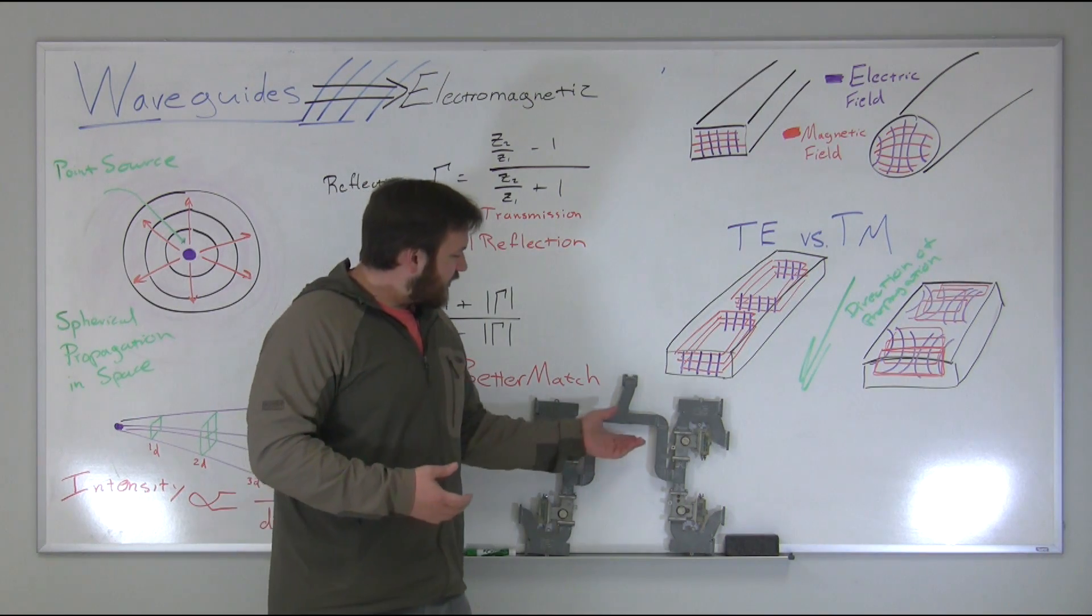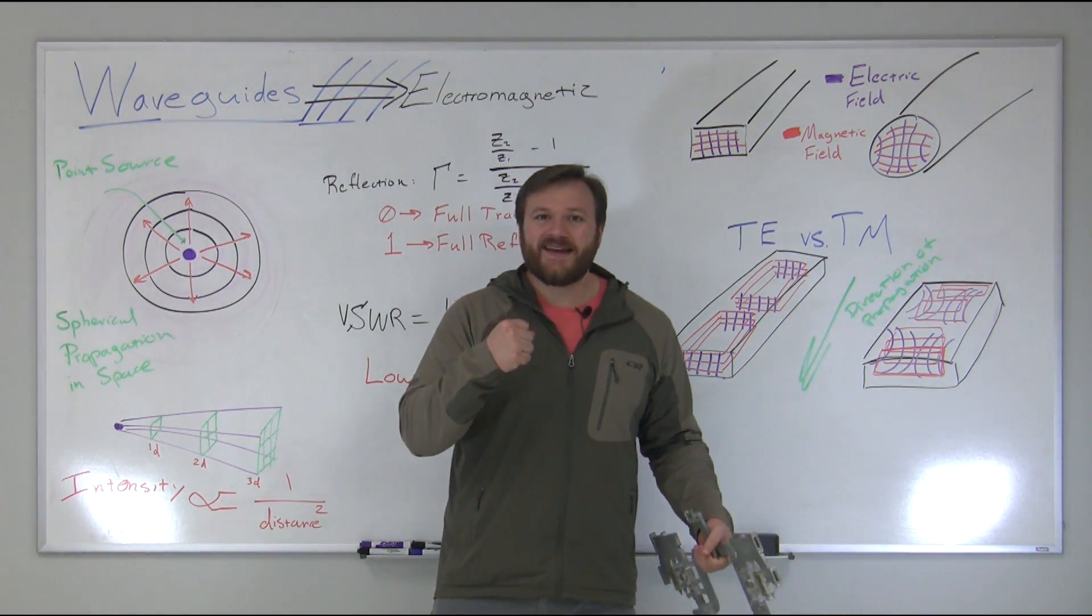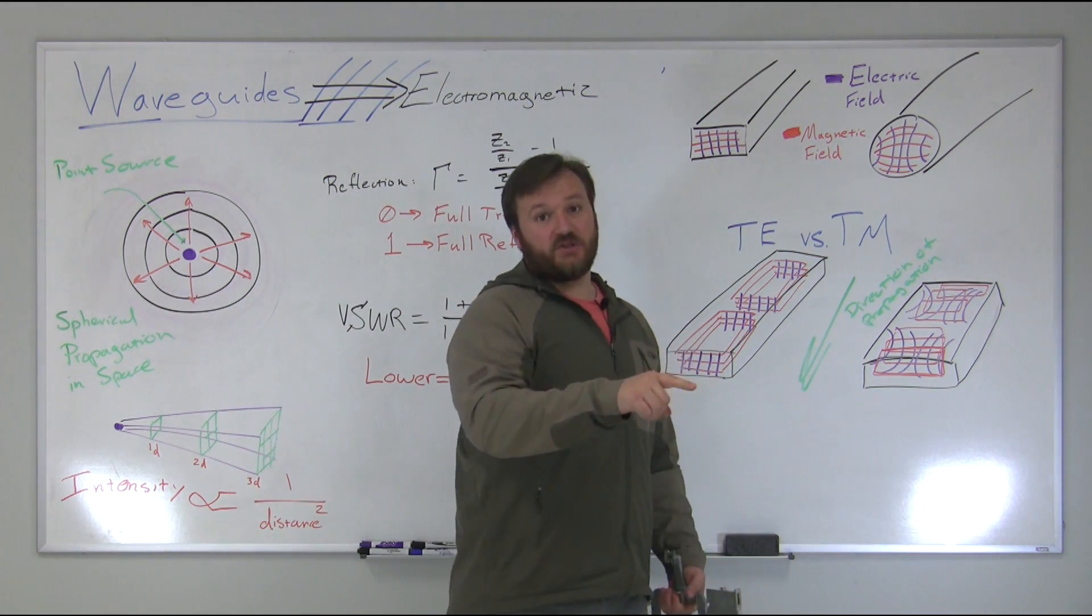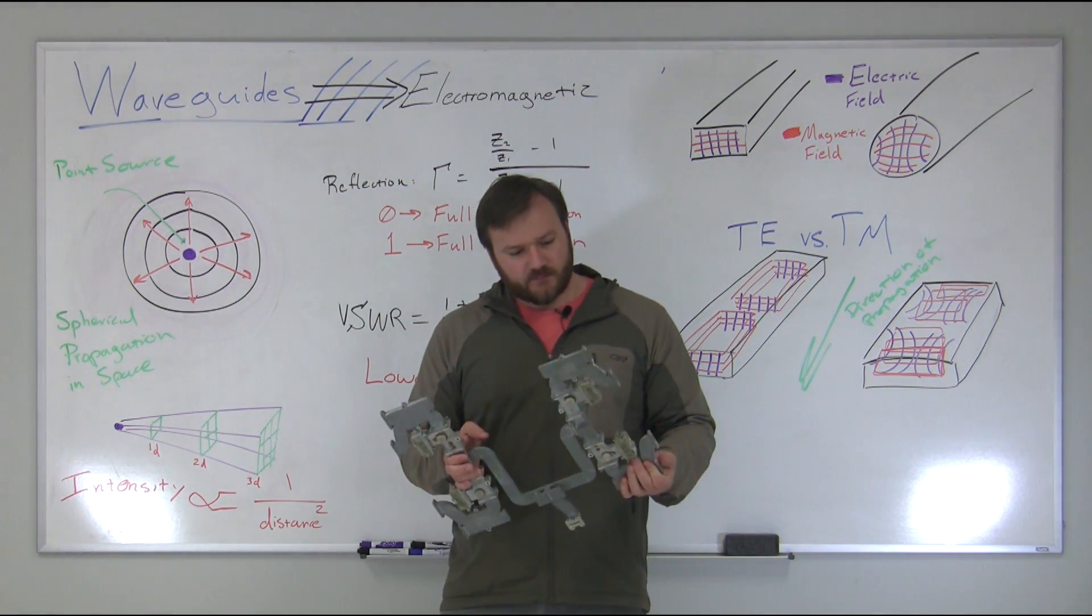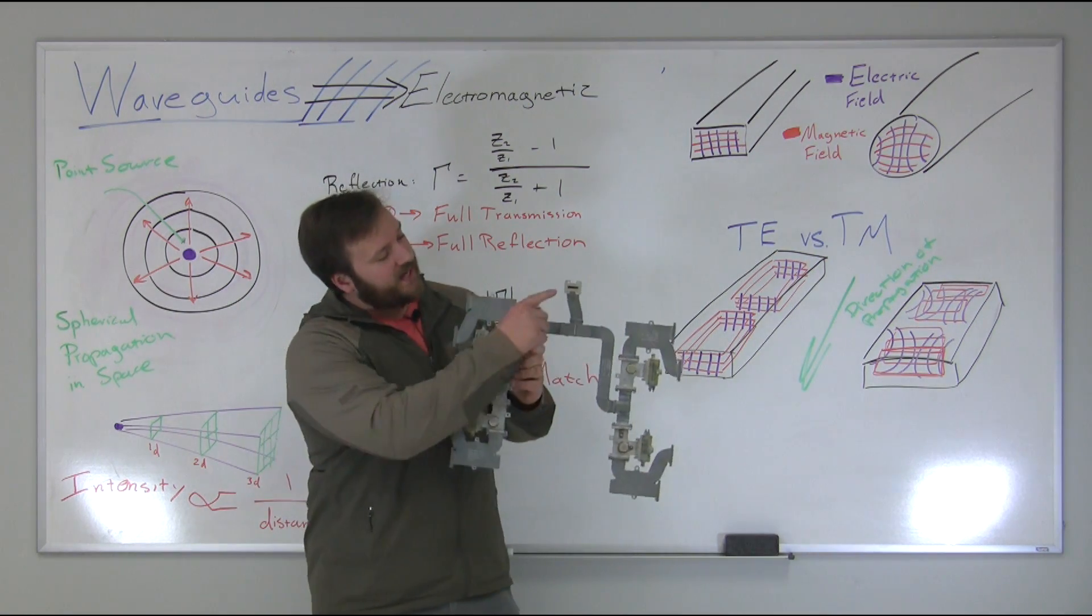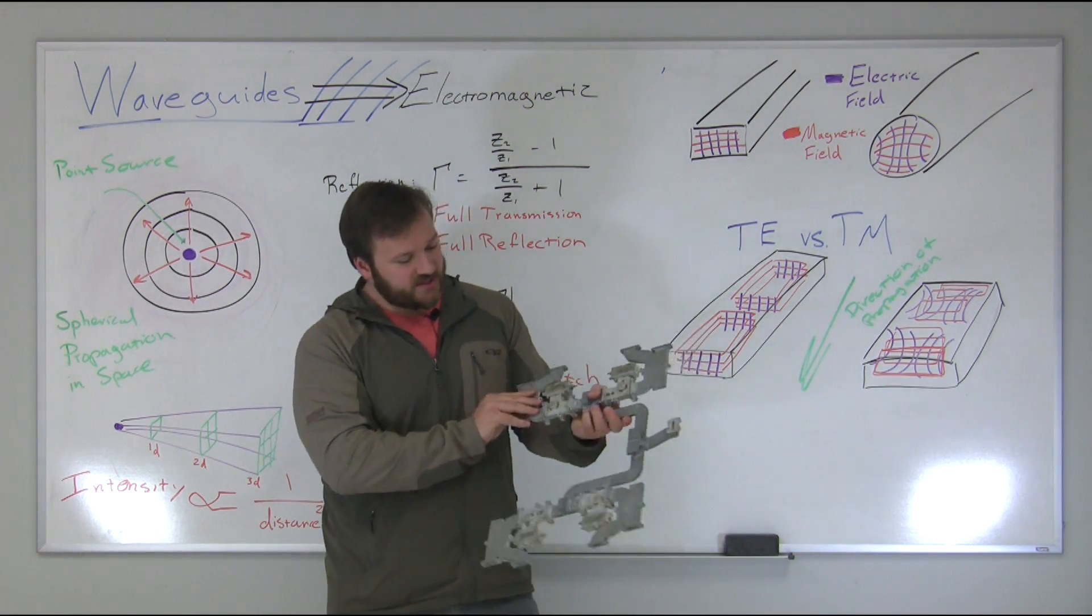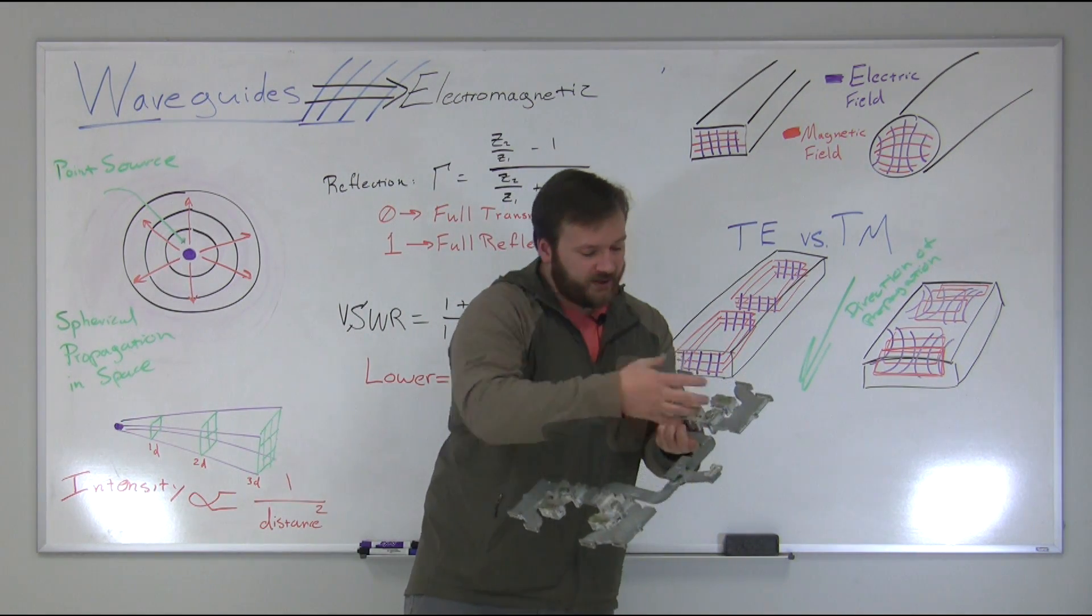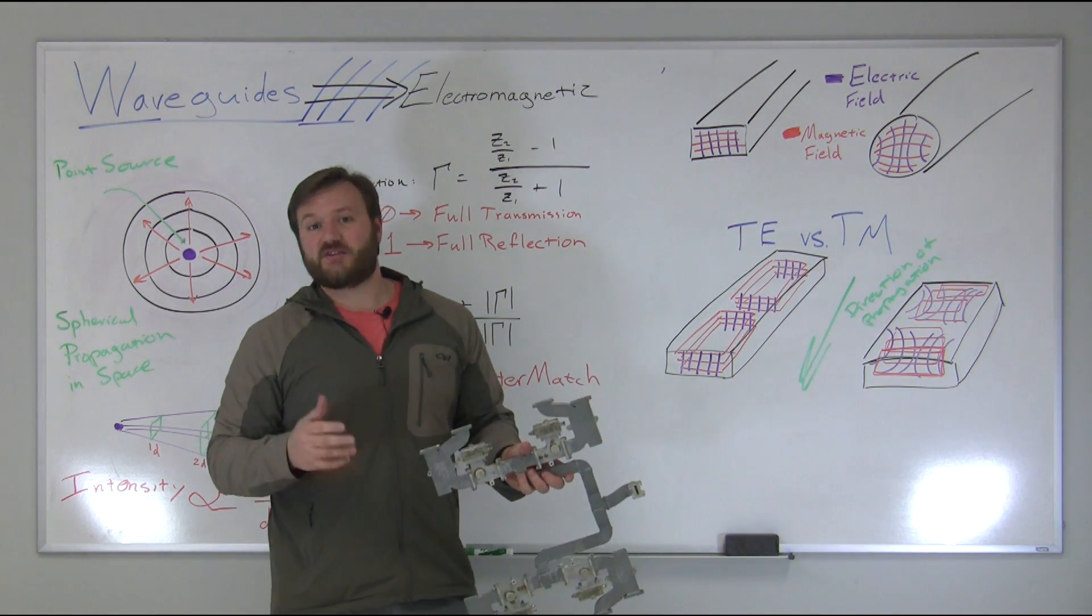A waveguide is essentially a way of constraining electromagnetic energy and taking that and causing it to propagate, but only in one dimension. For example, this is a waveguide feed network that feeds multiple ports of an antenna system. It's got a little rectangular port here, and it goes out to all these other rectangular ports. What it's doing is it's causing the radiation, keeping it inside of here, and causing it only to propagate along the single dimensional line of action that it cares about.